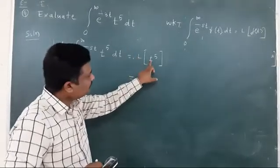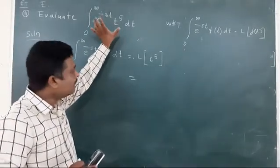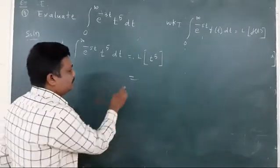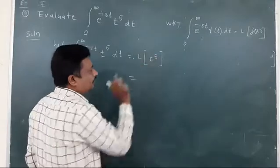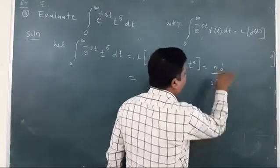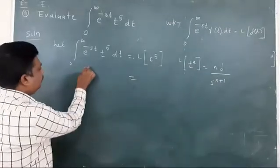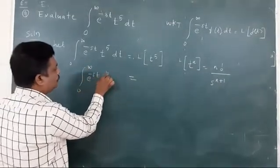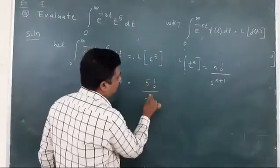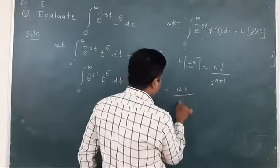Now I will find the Laplace transform of t raised to 5. I have converted this integration to a Laplace transform using the definition. Applying the t raised to n formula — L of t raised to n equals n factorial upon s to the power n plus 1 — where n equals 5, we get that the integral from 0 to infinity of e to the power of minus st times t raised to 5 dt equals 5 factorial upon s to the power of 6, that is 120 upon s raised to 6.